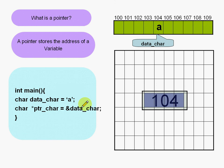Even though the pointer points to a character which is one byte, the pointer itself is actually four bytes.